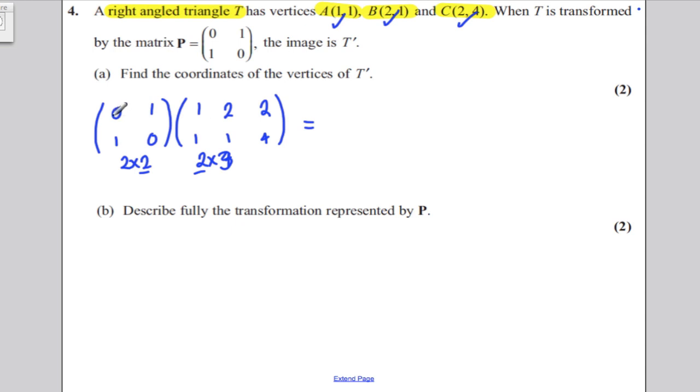All you've got to do is multiply this out. 0 times 1 and 1 times 1 is 1, 0 times 2 and 1 times 1 is 1, 0 times 2 and 1 times 4 is 4, 1 times 1 and 0 times 1 is 1, 1 times 2 and 0 times 1 is 2, and 1 times 2 and 0 times 4 is actually 2.